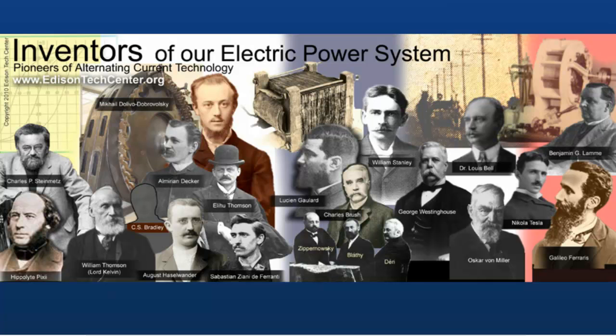As an example, an Italian scientist, Galileo Ferraris, published results on his work on an alternating current motor in an industrial journal in Italy. Meanwhile, Nikola Tesla, working on his own theories, registered the patent for such a device in the United States just two weeks later.